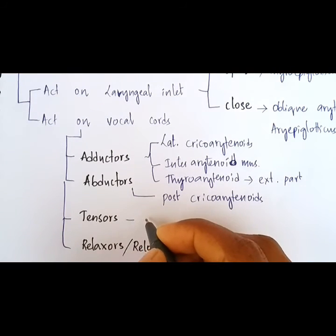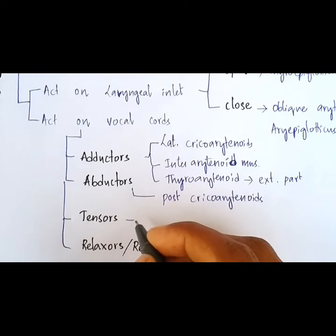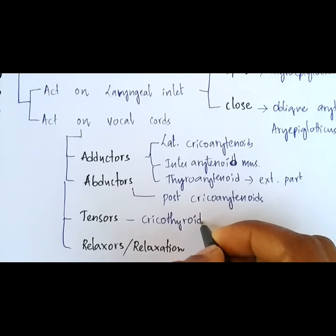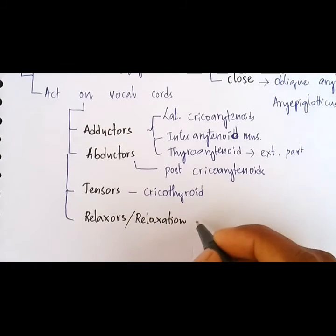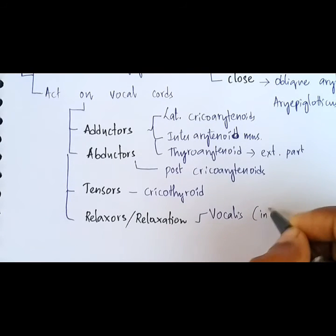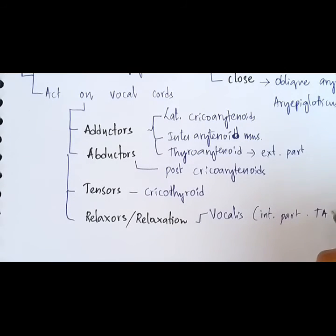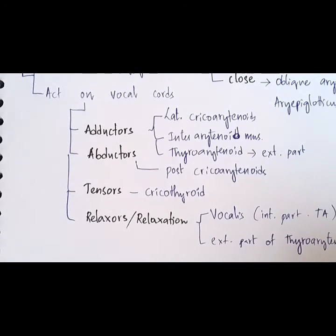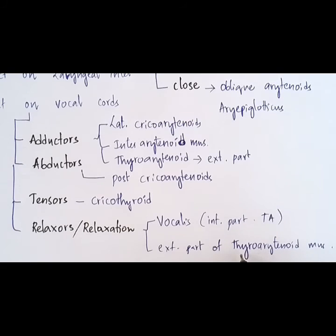We also have a single pair of muscles which increase the tension in the vocal cords: cricothyroid muscles. The relaxation is caused by vocalis, which is the internal median part of thyroarytenoid muscle, and the external part of thyroarytenoid muscle. So we can see that the entire thyroarytenoid muscle is a relaxer of vocal cords.